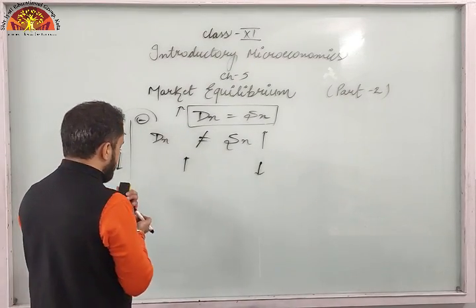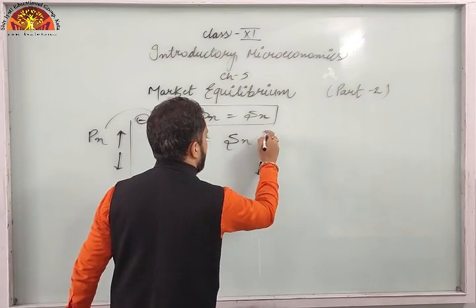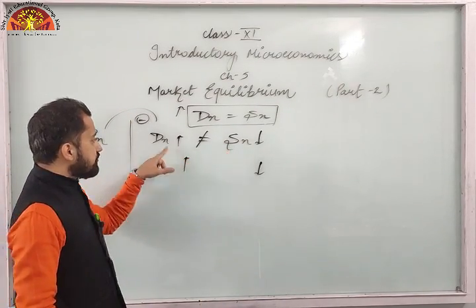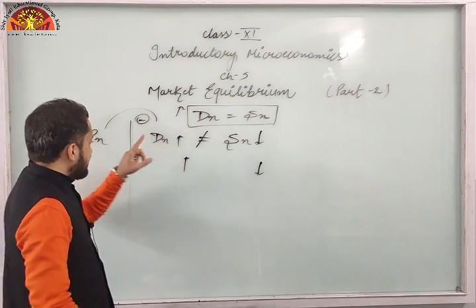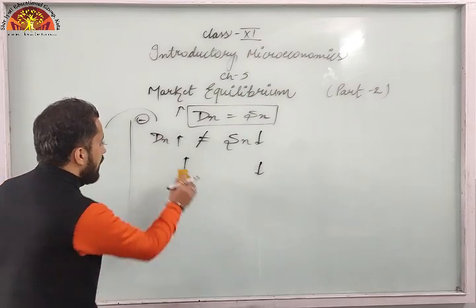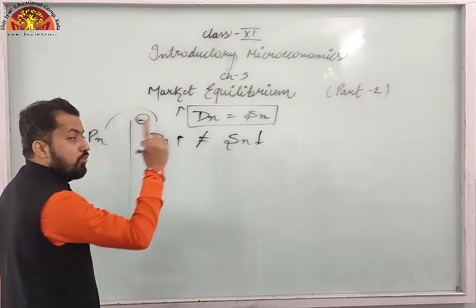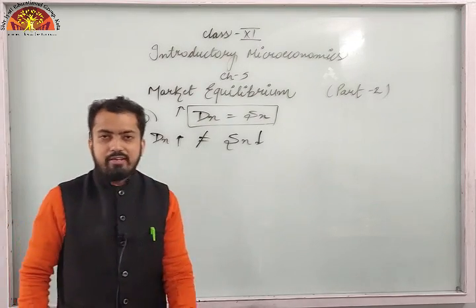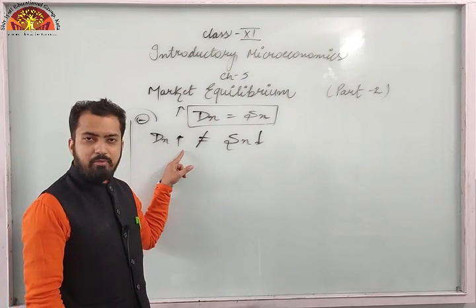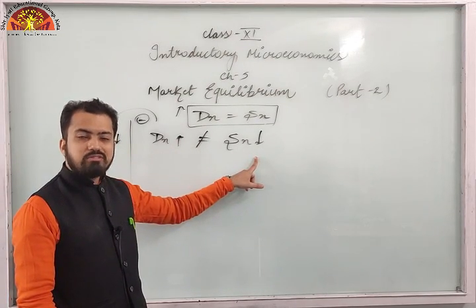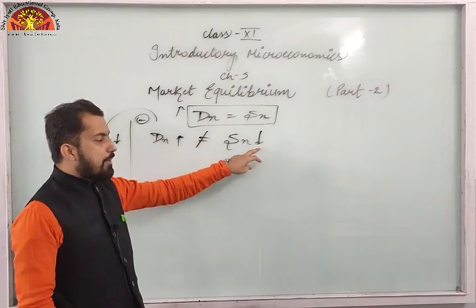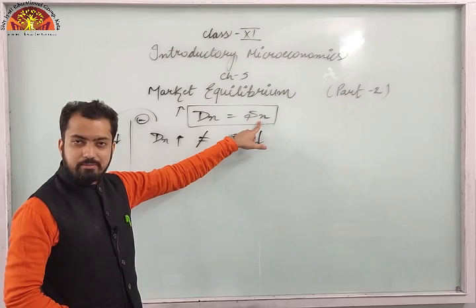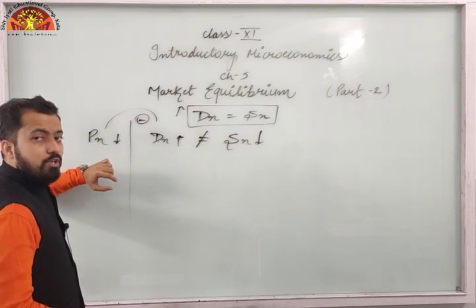Now the next case: demand is increasing and supply is reducing. Both forces are not balanced. Let's check the price relationship. Demand of a product increases when its price reduces — that is consumer welfare. And if price reduces, supply also reduces. So both things are not balanced and we still cannot achieve DX equal to SX. The opposite measure needs to be taken: PX will increase.